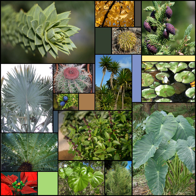Stomatal opening is controlled by the turgor pressure in a pair of guard cells that surround the stomatal aperture. In any square centimeter of a plant leaf there may be from 1,000 to 100,000 stomata. The shape and structure of leaves vary considerably from species to species of plant, depending largely on their adaptation to climate and available light, but also to other factors such as grazing animals such as deer, available nutrients, and ecological competition from other plants.